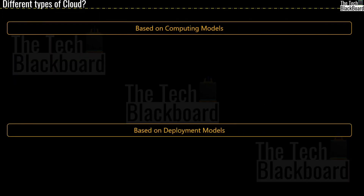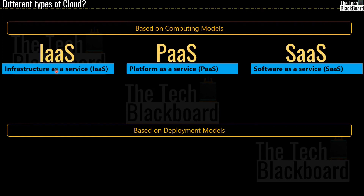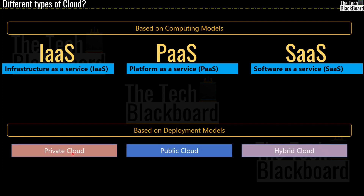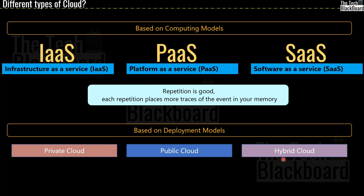Let's revise once again. We have three types of cloud based on computing models: Infrastructure as a Service or IaaS, Platform as a Service or PaaS, and Software as a Service or SaaS. And we have three major types of cloud based on deployment models: private cloud, public cloud, and hybrid cloud. Before we move ahead, is this the only time we are learning these concepts? Of course not. There is going to be a lot of reiteration of important cloud concepts throughout the course. As I always say, repetition is good — each repetition places more traces of the event in your memory. I will give you more details, more examples, and use cases in the subsequent parts so that you get a solid grip on cloud concepts.